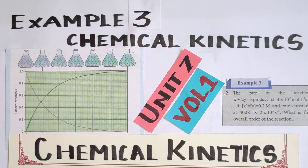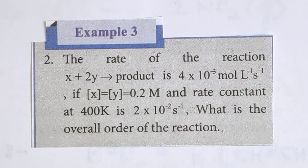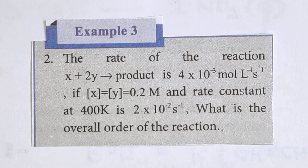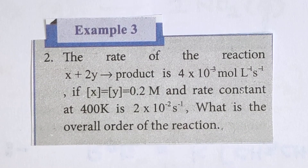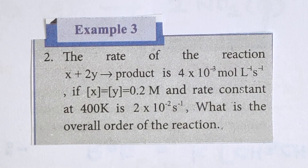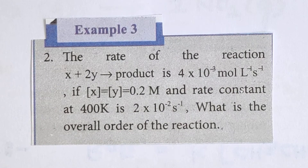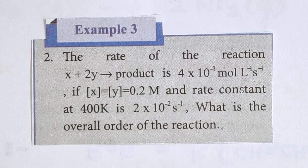Hello students, welcome. This is a Chemical Kinetics chapter, Example 3, video workout. First question: the rate of the reaction x plus 2y gives products is 4 into 10 power minus 3 mole per liter per second. If x concentration is equal to y concentration equal to 0.2M, and rate constant at 400K is 2 into 10 power minus 2 per second, what is the overall order of the reaction?